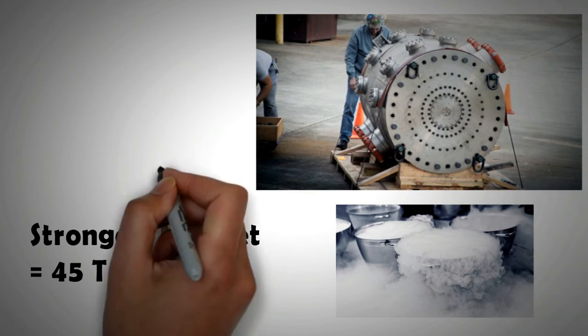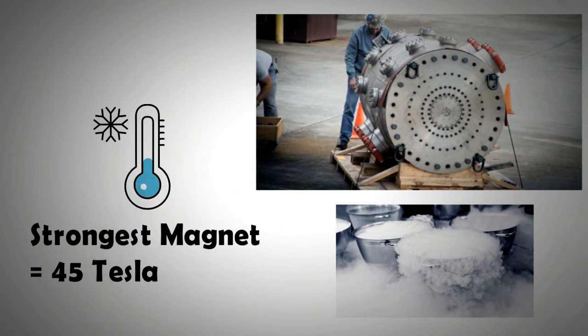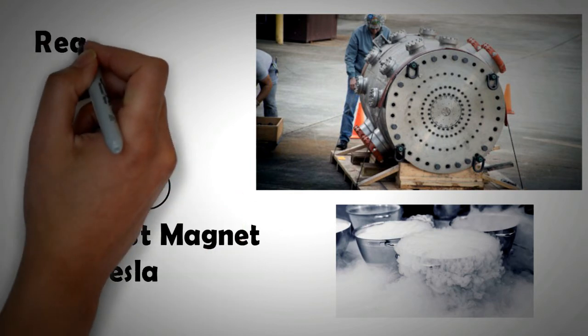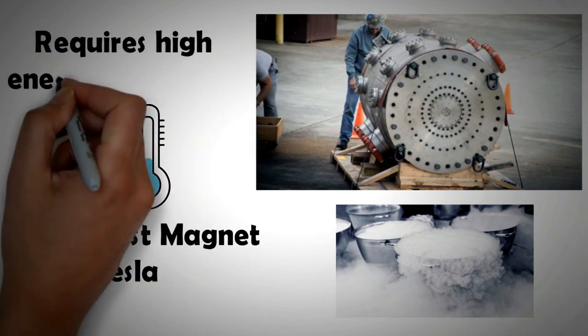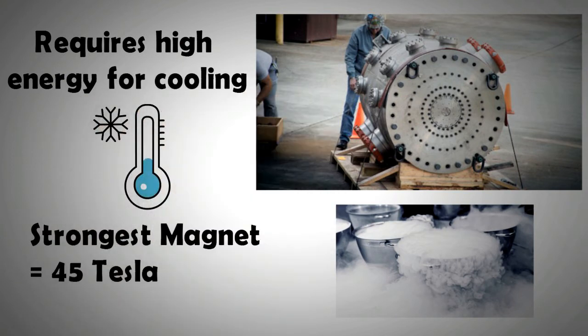Most materials require cooling to a temperature 200 degrees centigrade below the freezing point. Therefore, a huge amount of energy goes into cooling superconductor material and keeping them at this low temperature. Only this way can very strong magnetic fields be created.